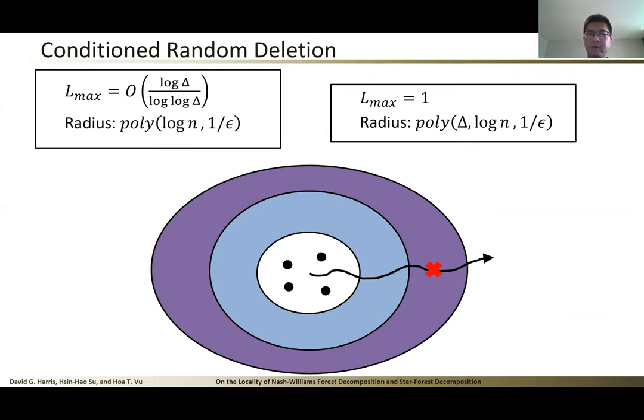Moreover, we can further push L_max to be 1, and that will result in a trade-off on the radius. So we will have to increase the radius to poly(Δ, log n, 1/ε) to ensure that there's no paths of the same color that go outside the ball. The analysis is not obvious, but if you are interested, please take a look at the paper.